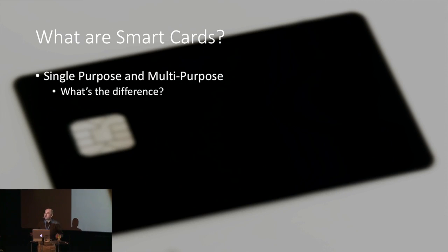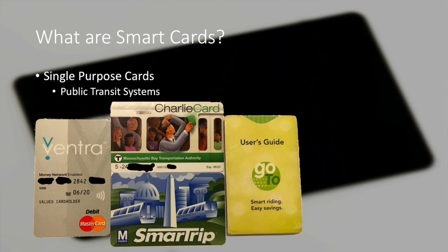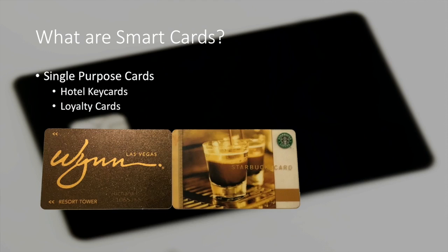Moving on to the types of cards that are available: you've got single-purpose and multi-purpose cards. Single-purpose cards are things like transit system cards — I actually have all of these here. There's the Ventra card for Chicago, the Charlie card for Boston, the SmarTrip card for Washington DC, and the Go-To card for Minneapolis, which has come in handy for a couple of JNUC trips. You've also got hotel key cards and loyalty cards, like the key card from the Wynn Hotel in Las Vegas and a Starbucks card.